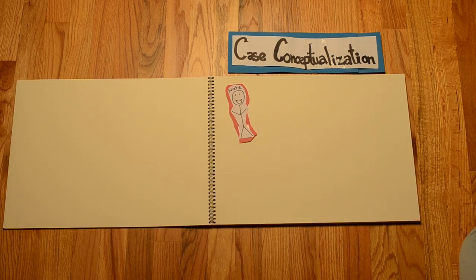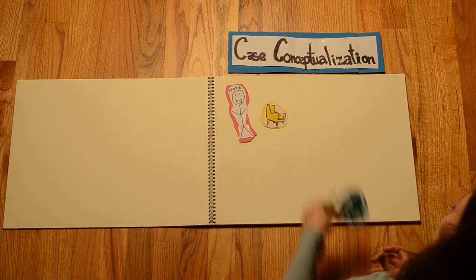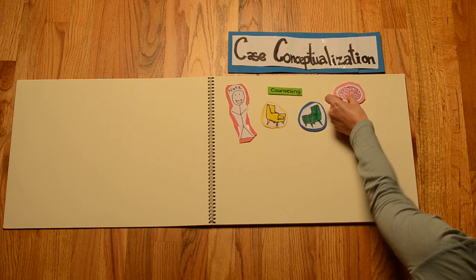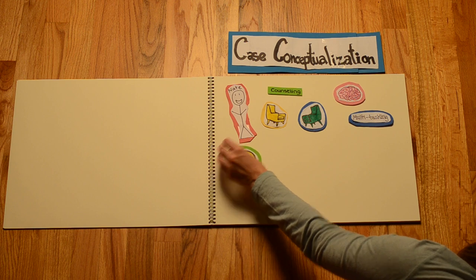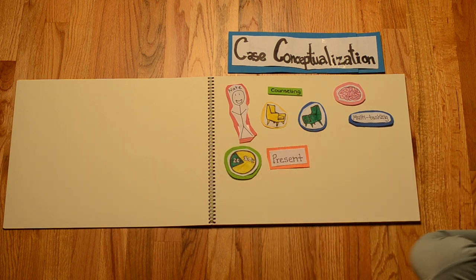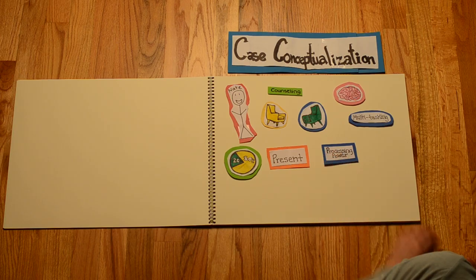Now back to Nate. We are doing a similar thing right now in the counseling room with him. I mean, in a way, we're really multitasking. Let's think about it. Say at this moment, about 80% of our mental processing power is going to being intensely present with Nate, right now, right in this moment.